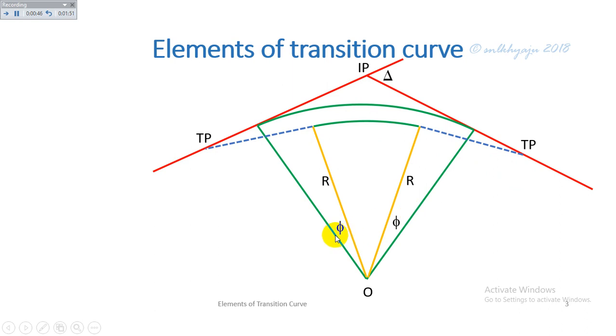Phi is the central angle made by the half length of the transition curve. The central angle of the circular curve is equal to delta minus 2 phi.